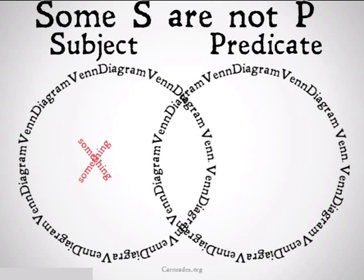Basically, what this is saying is that there is at least one S, and that S is not a P. We don't even know if predicates exist. All we know is that there is some S, and that S doesn't have the quality that is predicated of it.